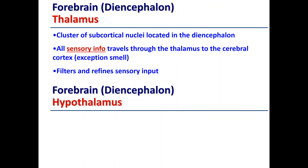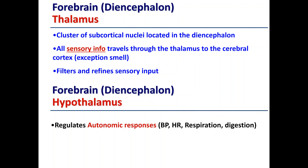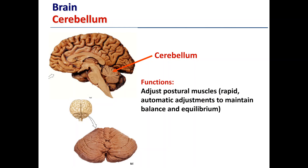In the thalamus we filter and refine all sensory input and make decisions based on that. The plan is then formed in the cerebral cortex. The hypothalamus regulates autonomic responses — not conscious responses — such as blood pressure, heart rate, breathing rate, and digestion. The cerebellum adjusts postural muscles and makes rapid automated adjustments to maintain balance and equilibrium. Even while standing still, constant small contractions are happening, and the cerebellum is heavily involved in that.